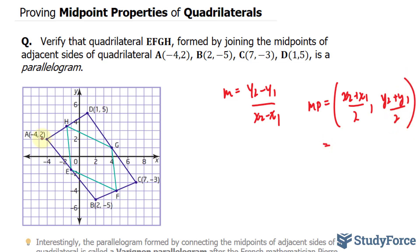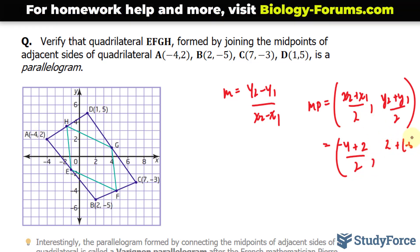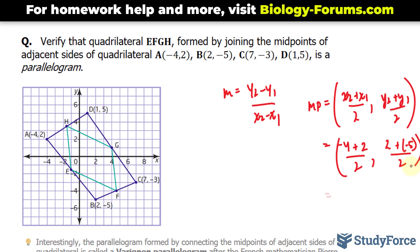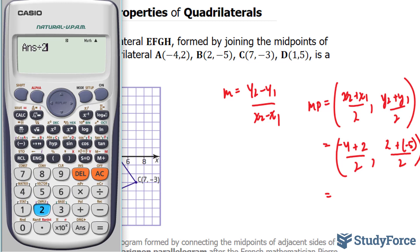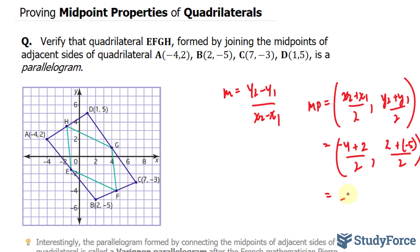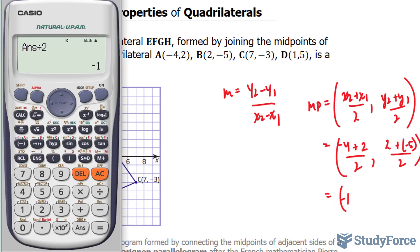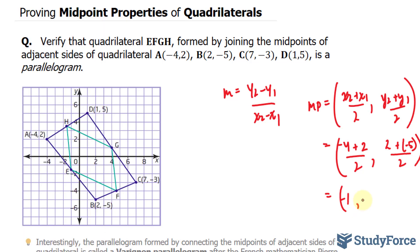X2, X1 is the coordinate of A, negative 4, plus the coordinate here, 2 over 2. Y2 is 2 plus negative 5 over 2. Using our calculator to do this, we have negative 4 plus 2 divided by 2, that's negative 1. And 2 plus negative 5 divided by 2 is negative 3 over 2, which is negative 1.5. That's the midpoint for E.